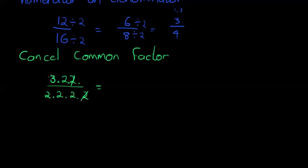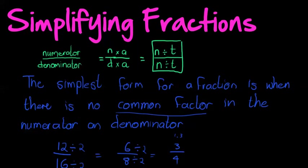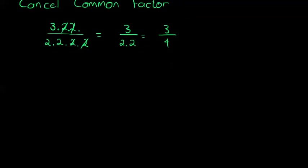So that in the end, I'm left with 3 over 2 times 2, which is 3 over 4. And this is exactly the process of simplifying fractions. The process: first, factorize numerator and denominator.